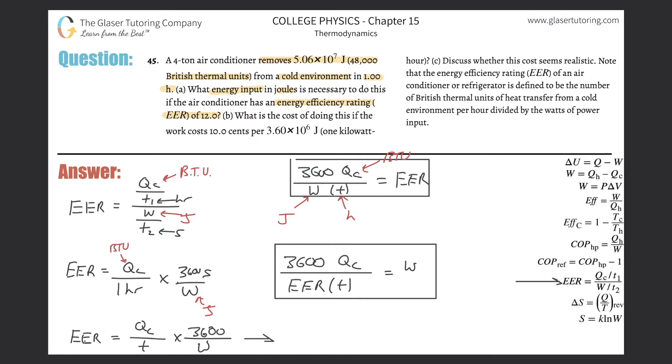Now, all you got to do is plug the stuff in. So, this is 3,600, multiplied by Q sub C in BTU, so that's 48,000, divided by the EER value, and that was 12, multiplied by the time in hours, which was one hour, and that's it.